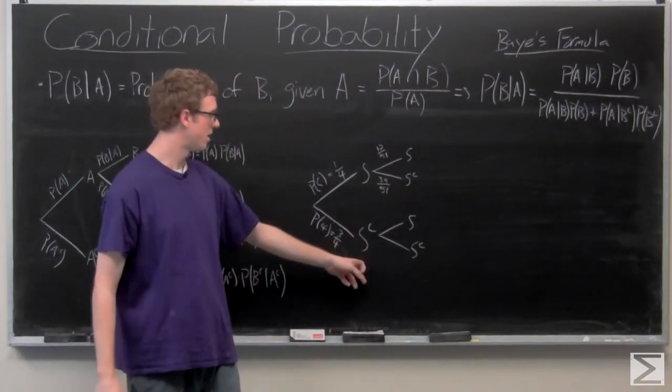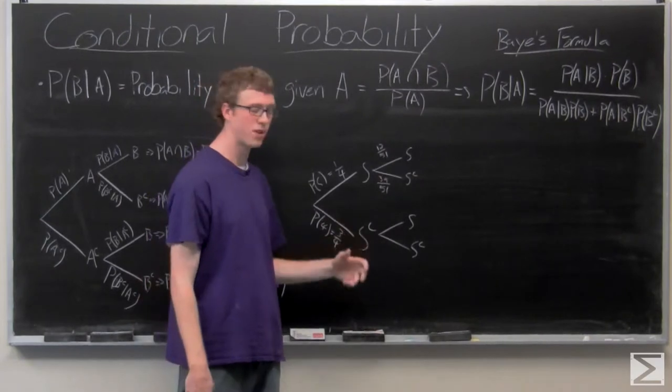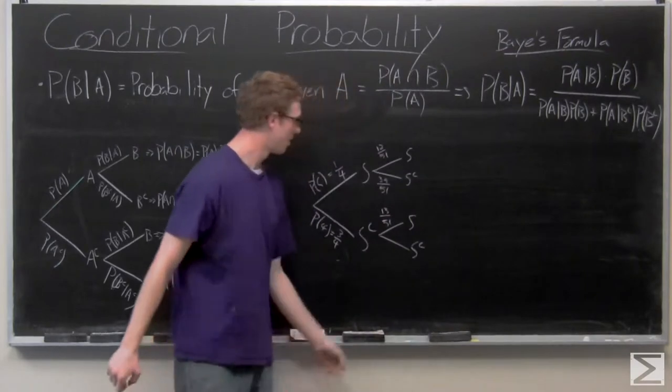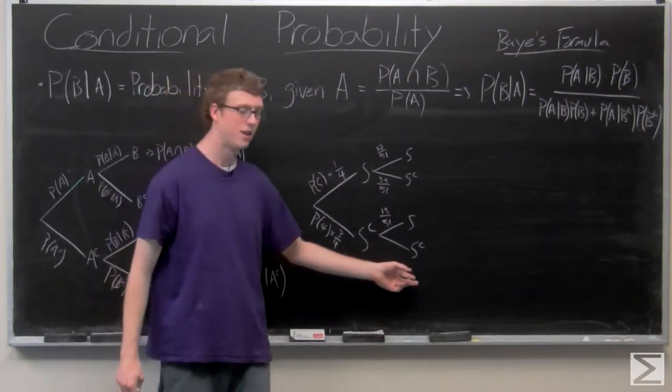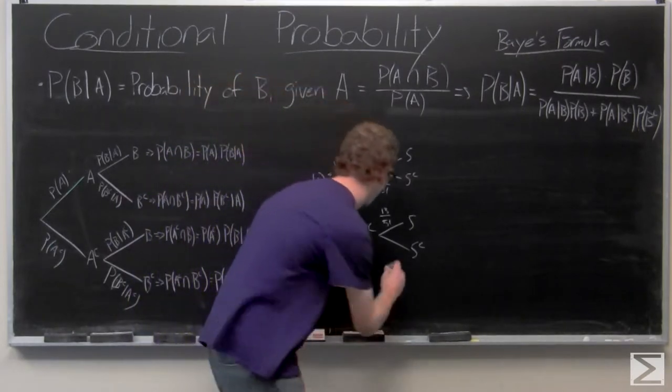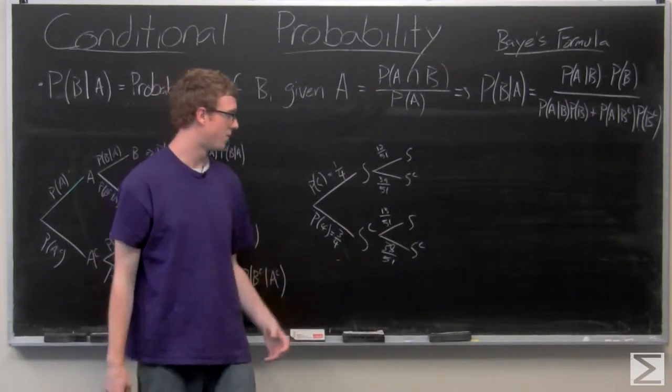This is not a spade and then a spade. So there's still 13 spades, but only 51 cards left. And then not a spade and then not a spade. There are 38 total cards left that aren't a spade out of 51.